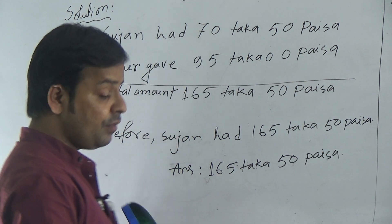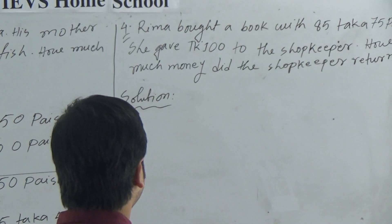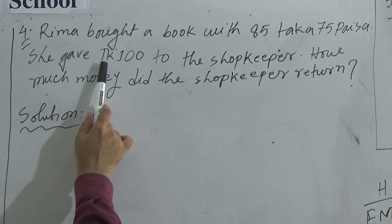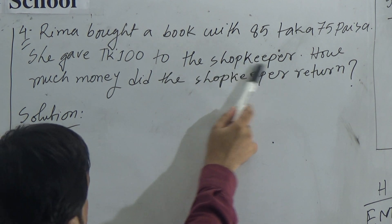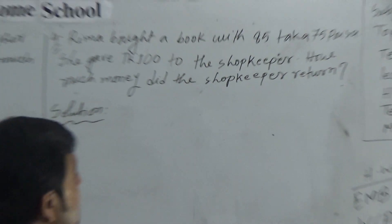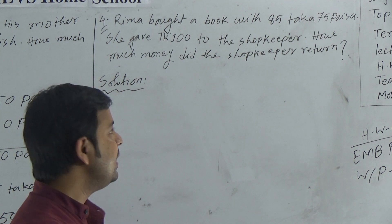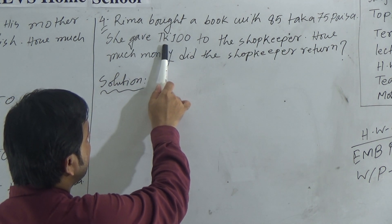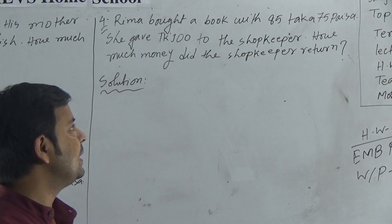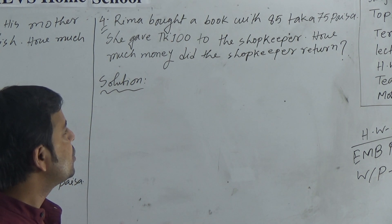Dear students, I hope you have understood question 3. Now I will solve question 4. Question 4 is: Rima bought a book with 85 taka 75 paisa. She gave taka 100 to the shopkeeper. How much money did the shopkeeper return? It means the price of the book is 85 taka 75 paisa, and she gave 100 taka to the shopkeeper. The shopkeeper will return her some money. We have to find out that amount.